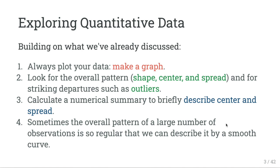Sometimes the overall pattern of a large number of observations is so regular that we can describe it by a smooth curve. That means sometimes we can make a very slight assumption that will help us understand our data more easily and describe it in easier terms.